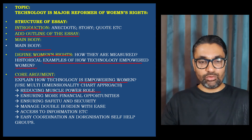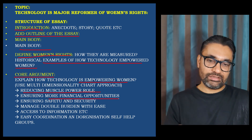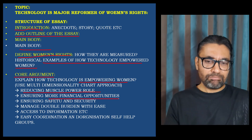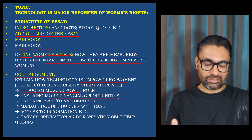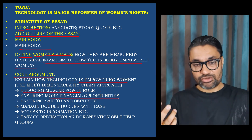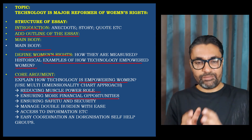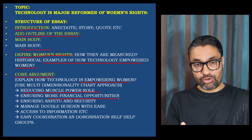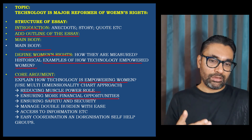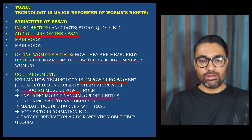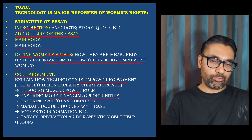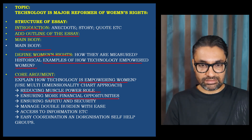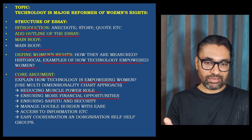So reducing muscle power role, then ensuring more financial opportunities — now we have intellectual jobs, new technological jobs, smart jobs which females can do. The most important form of empowerment is economic empowerment. If you give economic independence, the rest of your empowerment follows. Female economic independence is more possible because of the financial opportunities that the technological sector expands — intellectual jobs, timely-nature jobs, easy mobility, less muscle power jobs. So technology empowers in this way.